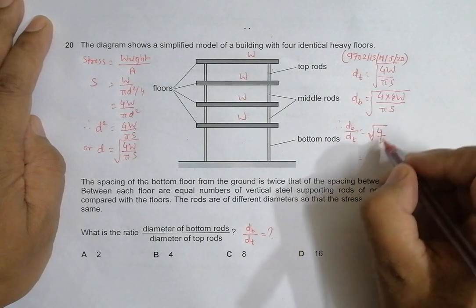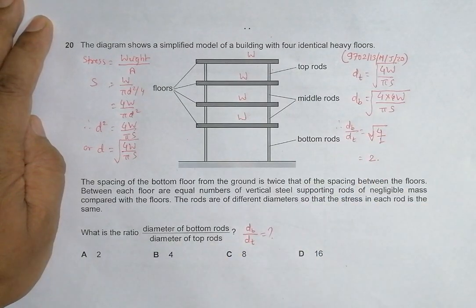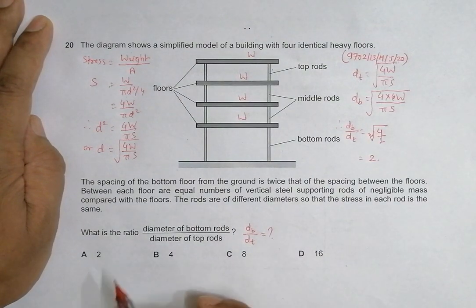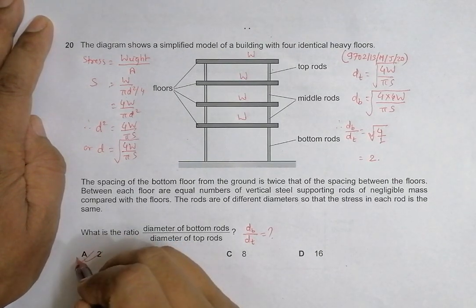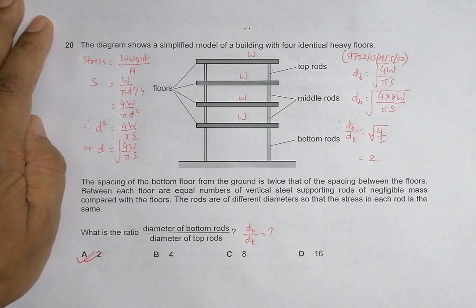So the diameter at the bottom should be twice the diameter of the rod at the top to have the same stress. This is given by choice number A, so choice A should be the correct choice.